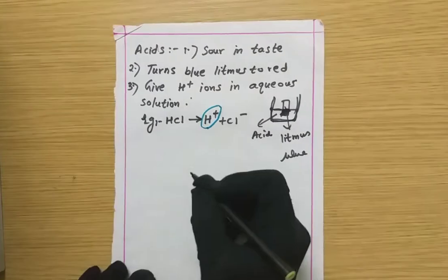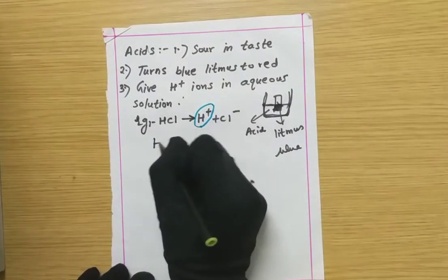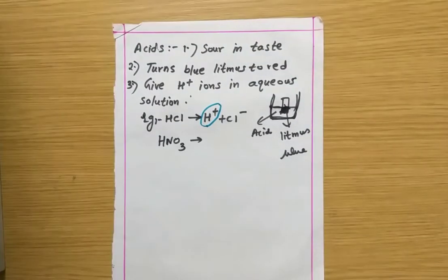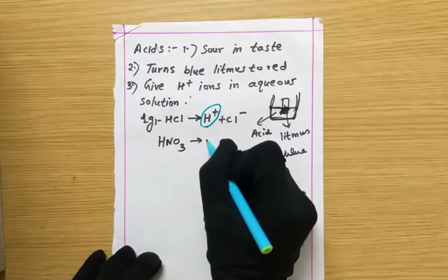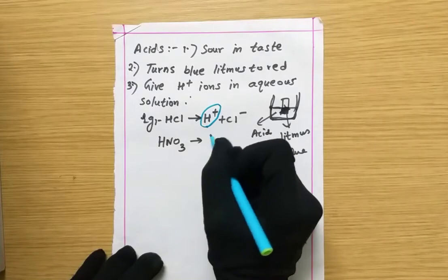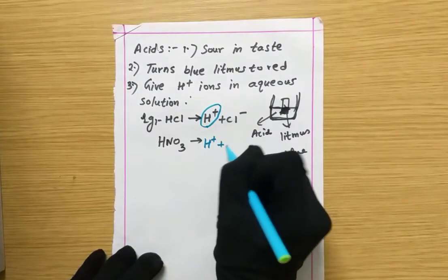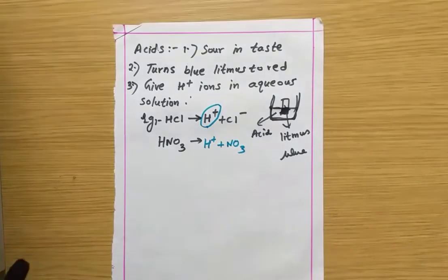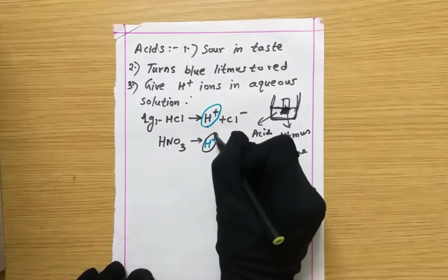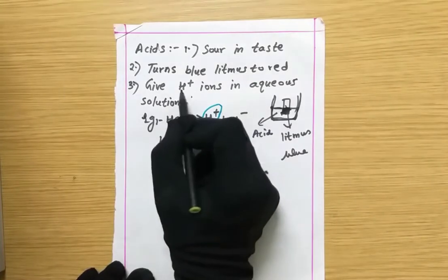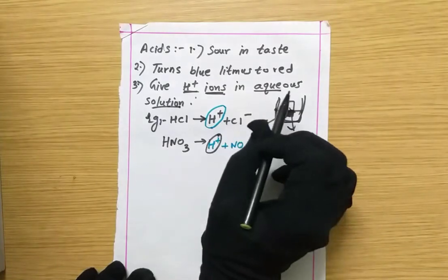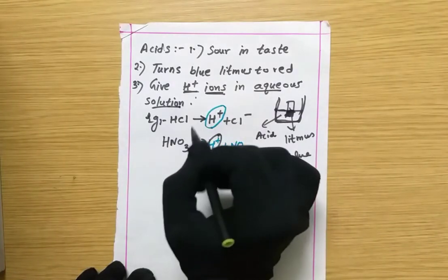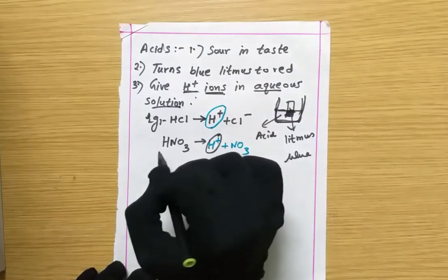Similarly, HNO₃ on dissociation gives H+ and NO₃⁻ ions. Again, H+ ions are produced. So remember: in an acid, H+ ions are produced in aqueous solution. Whenever H+ ions are produced in aqueous solution, we can say that substance is an acid. So HCl is an acid and HNO₃ is an acid.